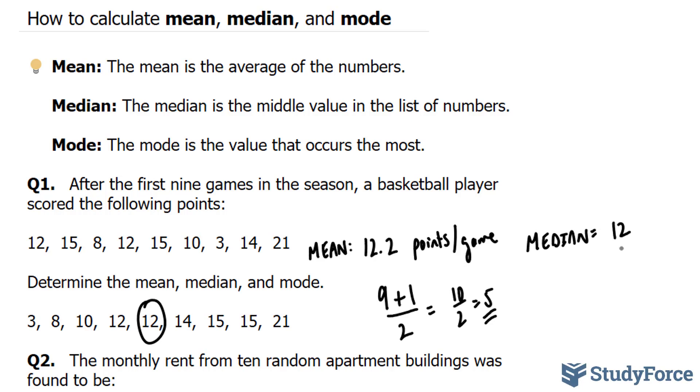Lastly, the mode is the number that is most repeating. And as you can tell, we have two modes, 12 and 15. So you have to write them both down, 12 and 15.